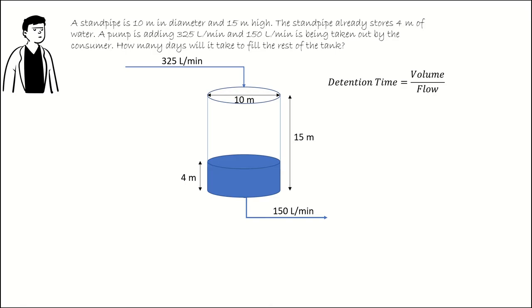The volume of our tank is equal to pi times the radius squared times h, where radius is the diameter divided by 2. In our example, the diameter is 10 meters. 10 meters divided by 2 is the radius, or the radius is equal to 5 meters.